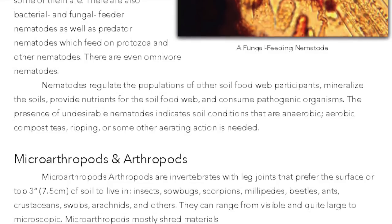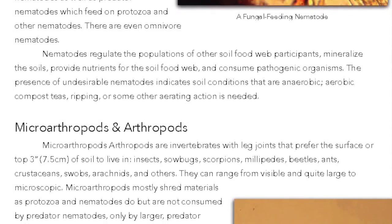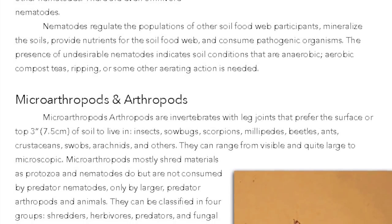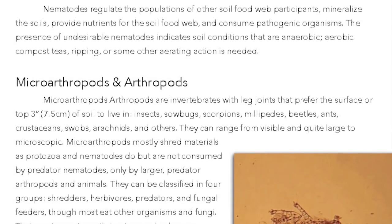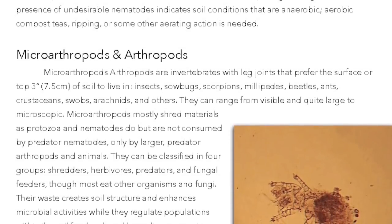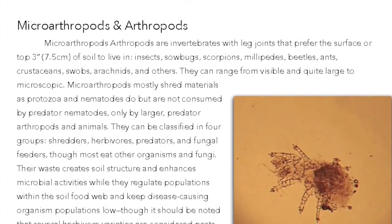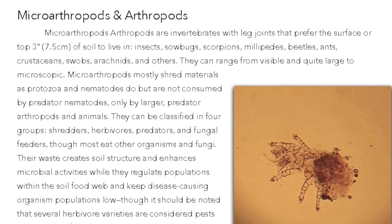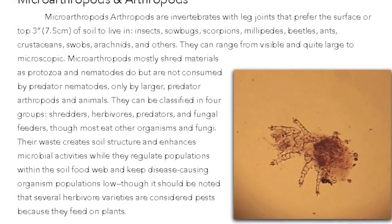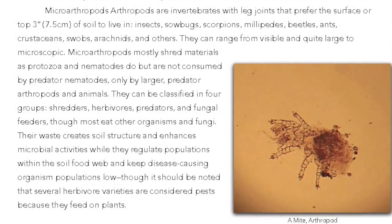Microarthropods and Arthropods. Microarthropods and arthropods are invertebrates with leg joints that prefer the surface or top three inches (7.5 centimeters) of soil to live in. Examples include insects, sow bugs, scorpions, millipedes, beetles, ants, crustaceans, arachnids, and others — ranging from visible and quite large to microscopic. Microarthropods mostly shred materials as protozoa and nematodes do, but are not consumed by predator nematodes, only by larger predator arthropods and animals. They can be classified in four groups: shredders, herbivores, predators, and fungal feeders, though most eat other organisms and fungi. Their waste creates soil structure and enhances microbial activities, while they regulate populations within the soil food web and keep disease-causing organism populations low. It should be noted that several herbivore varieties are considered pests because they feed on plants.